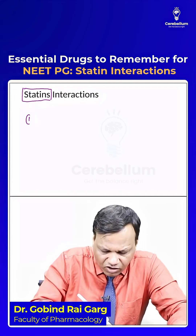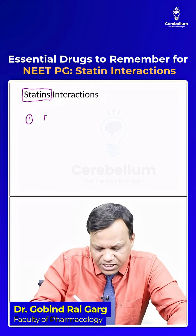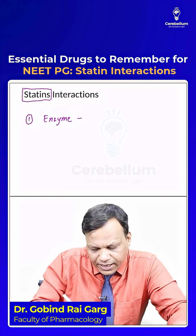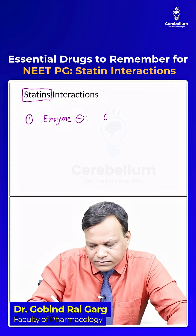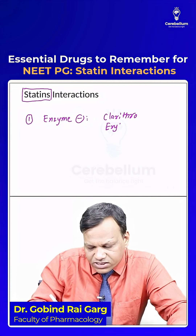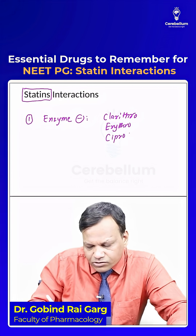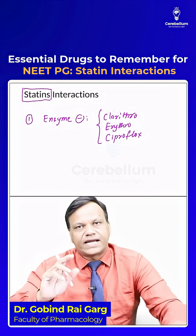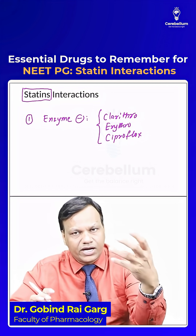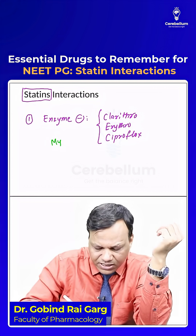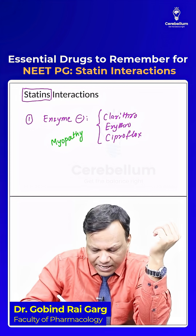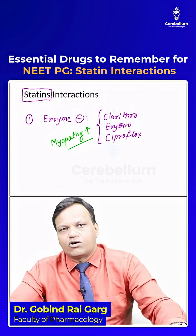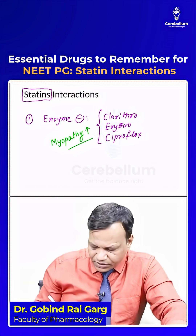The most important interaction of these drugs is with enzyme inhibitors like clarithromycin, erythromycin, and ciprofloxacin. These drugs inhibit the metabolism of statins. When a statin is not metabolized, it accumulates, and that can lead to myopathy. So there is an increased risk of myopathy when statins are given with enzyme inhibitors like clarithromycin, erythromycin, or ciprofloxacin.